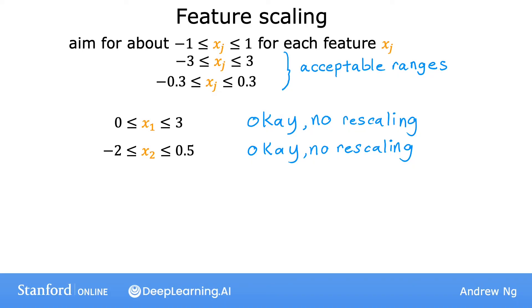But if another feature like x3 here ranges from negative 100 to plus 100, then this takes on a very different range of values than something from around negative 1 to plus 1. So you're probably better off rescaling this feature x3 so that it ranges from something closer to negative 1 to plus 1.